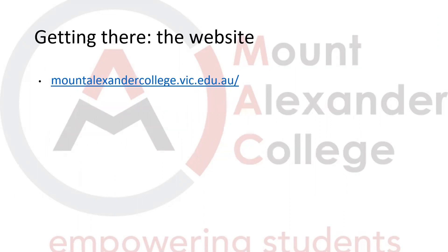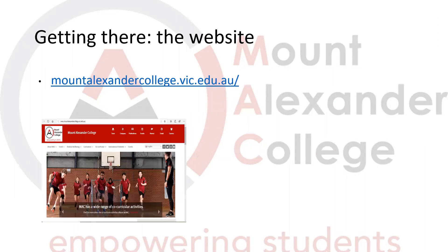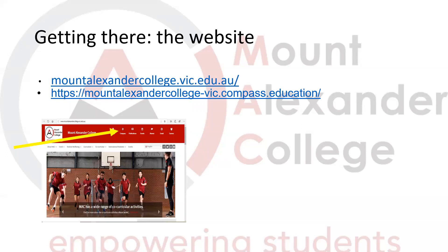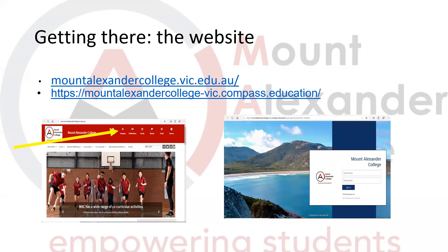Firstly, how you get to Compass — you can get there in two different ways. You can access the school website and you will see there is a Compass button at the top. You simply click that and it will take you to the Compass home page. Another way is by simply typing in the Mount Alexander Compass website page and it will bring you up to the landing page.